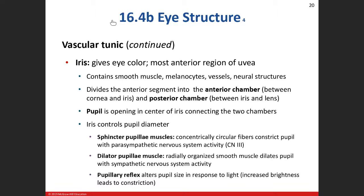To change the diameter of the pupil, we have two groups of muscles. The sphincter pupillae muscle — and remember, sphincter muscles make an opening smaller, just like the orbicularis oris and orbicularis oculi — will constrict the pupil and make it smaller. This is under parasympathetic nervous system control.